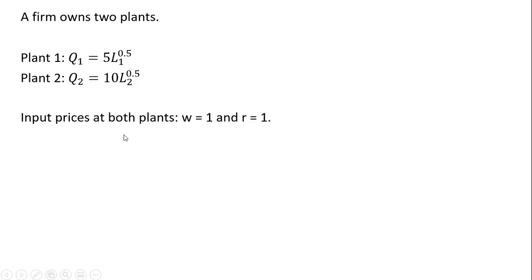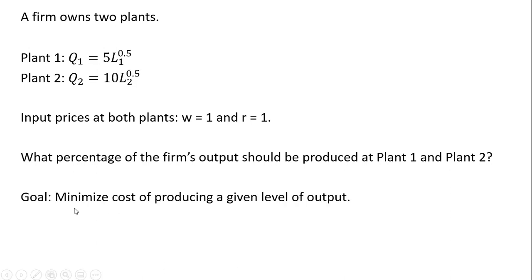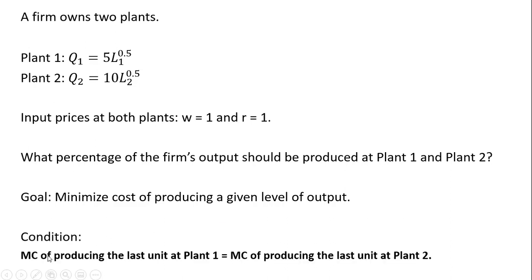The input prices at both plants: W, the wage, equals 1, and the price of capital equals 1. Now, we want to find out what percentage of the firm's output should be produced at plant one and plant two. The goal is to minimize the cost of producing a given level of output, and the condition that will meet that goal is: the marginal cost of producing the last unit at plant one should equal the marginal cost of producing the last unit at plant two.